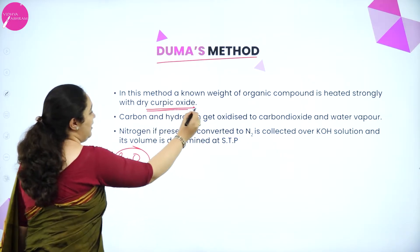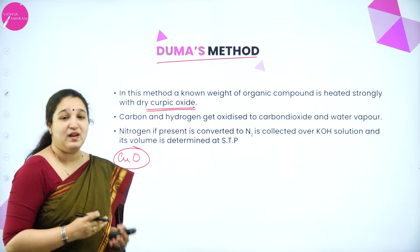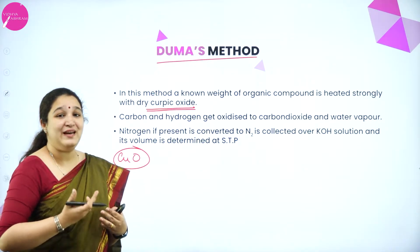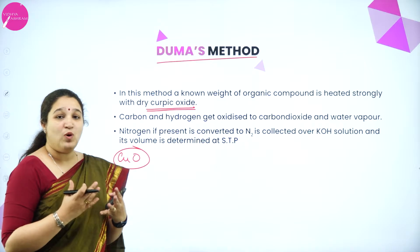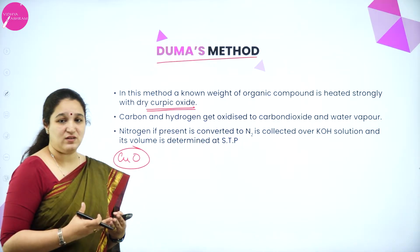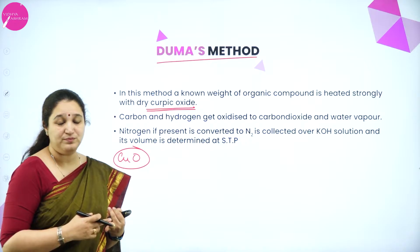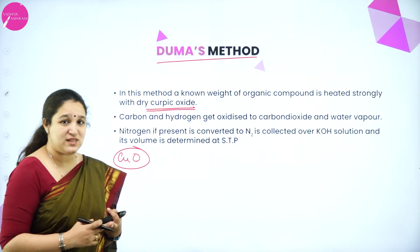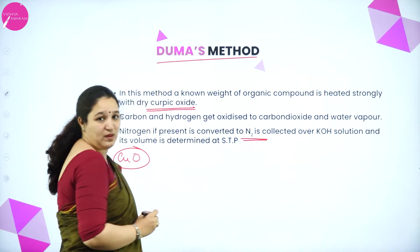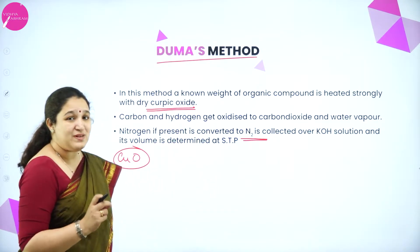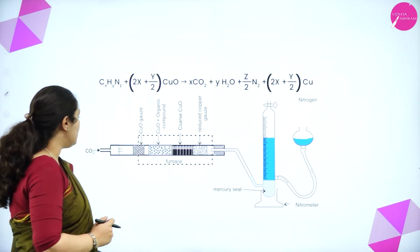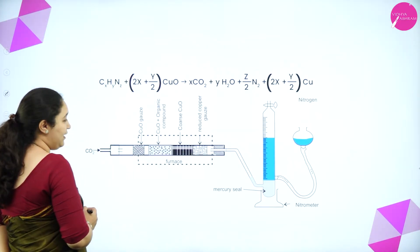We take dry cupric oxide or copper oxide, and in the atmosphere of carbon dioxide we heat it. Whatever carbon and hydrogen is present gets converted to carbon dioxide and water, and whatever nitrogen is there gets converted to nitrogen gas. So how is it collected? We take the organic compound and pass carbon dioxide completely through the setup.